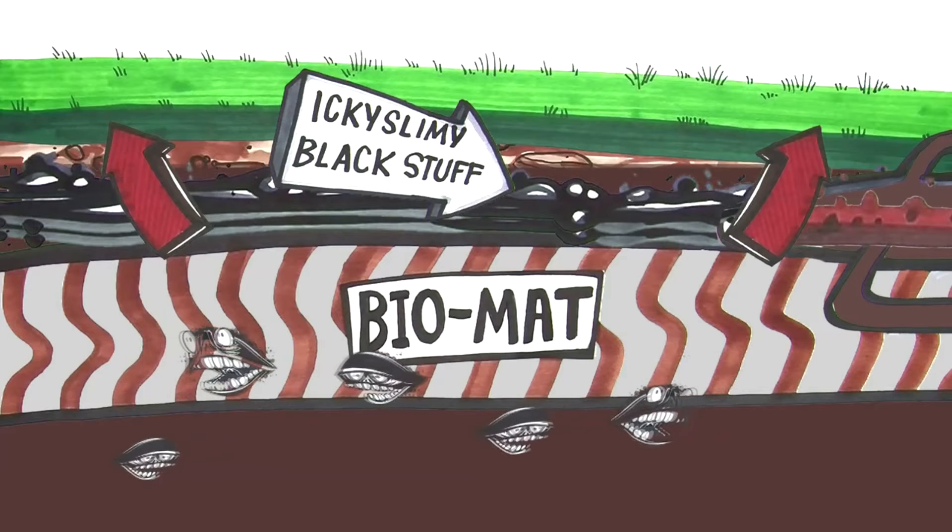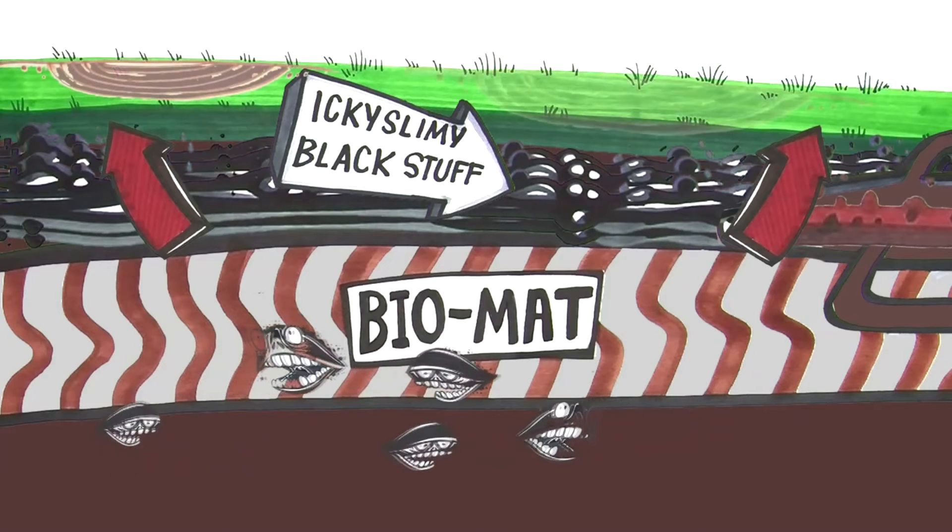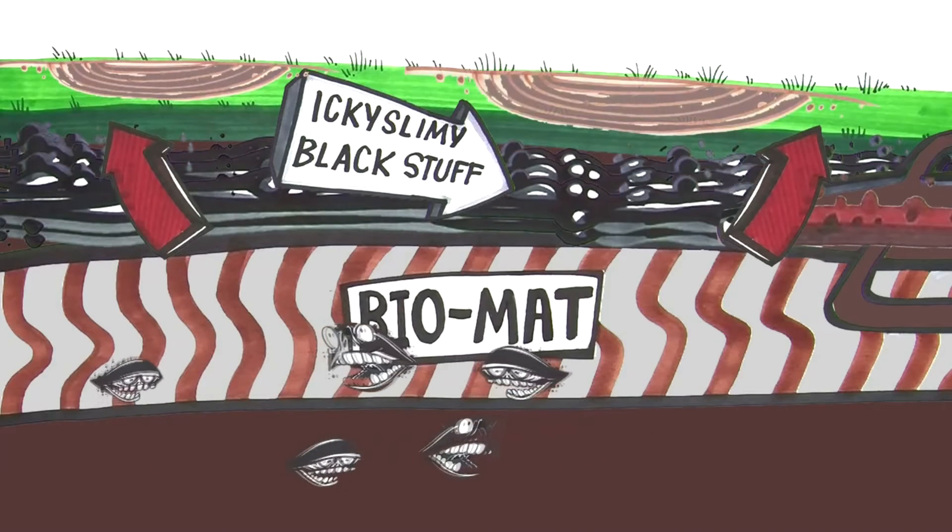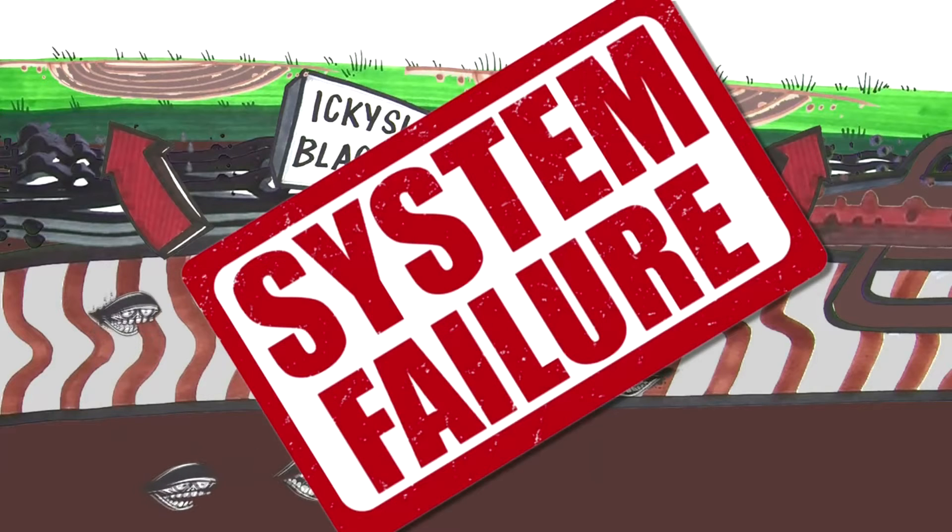Problem is, after a while, there's too much black, slimy stuff. The biomat grows thicker. Too thick, it clogs, and your system fails.